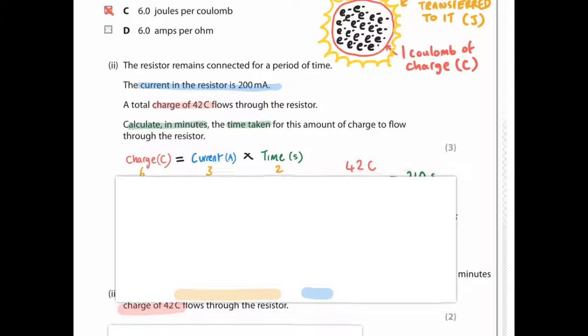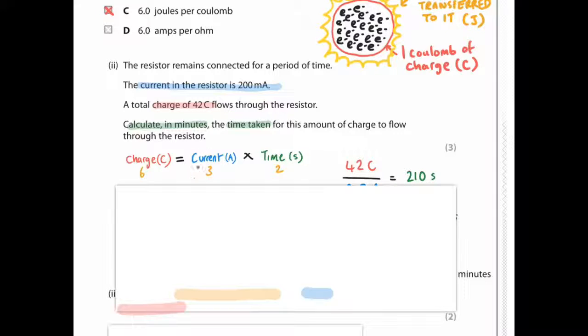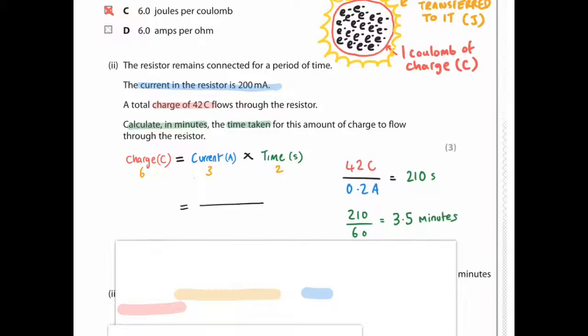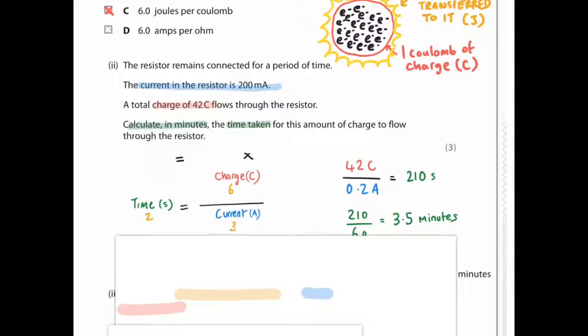Charge is current times time. We're trying to work out time in minutes. So once again, we can do our little rearranging technique. For example, if charge is 6, current is 3, time is 2, and we want to work out time, let's move time here, which is 2. What do we do with 6 and 3? Charge is 6, current is 3, 6 divided by 3 is 2. So it stands to reason that charge divided by current is time, because we've locked these figures in.